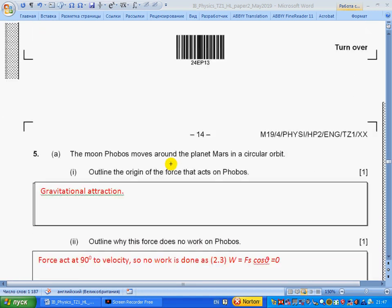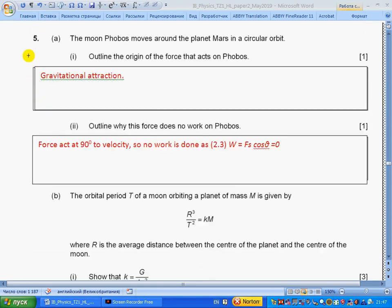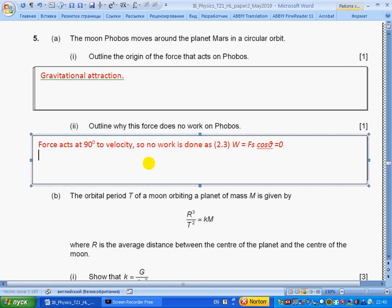Question 5, part a: The moon Phobos moves around the planet Mars in a circular orbit. Part i: Outline the origin of the force that acts on Phobos—gravitational attraction. Outline why this force does no work on Phobos. Force acts at 90 degrees, so no work is done according to section 2.3. Work is force times displacement times cosine of the angle between them. Here it is 90 degrees, so work is zero.